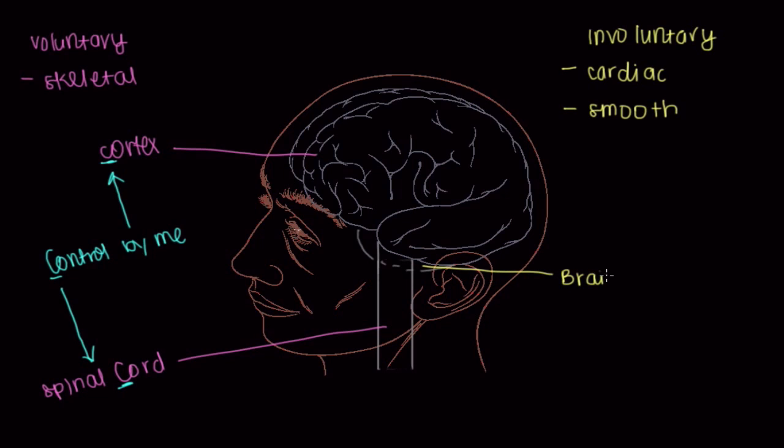And so the brainstem is responsible for things like if we should have more blood go to our abdomen instead of our skin, so if we should dilate smooth muscle in our arterioles, or if our heart should beat faster. The brainstem will regulate that through parasympathetic or sympathetic mechanisms we'll talk about in a minute.